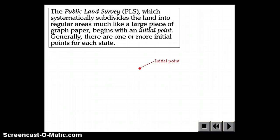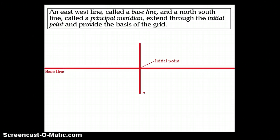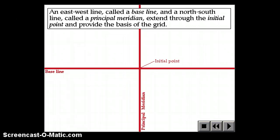The public land survey, which systematically divides the land into regular areas, much like a large piece of graph paper, begins with an initial point. Generally there are one or more initial points for each state. An east-west line called a baseline and a north-south line called a principal meridian extend through the initial point and provide the basis for the grid.